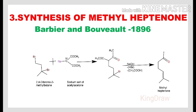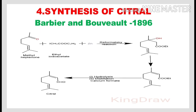Methylheptenone is synthesized by reacting 2,4-dibromo-2-methylbutane with the sodium salt of acetyl acetone. Methylheptenone is then reacted with ethyl iodoacetate in the presence of zinc to give a condensed product in a reaction known as the Reformatsky reaction. This condensed product is hydrolyzed and distilled with calcium formate to get geraniol.